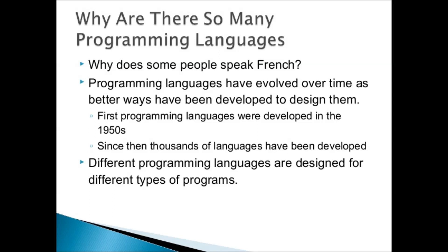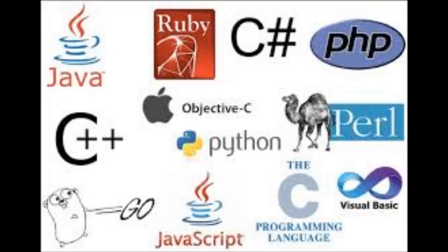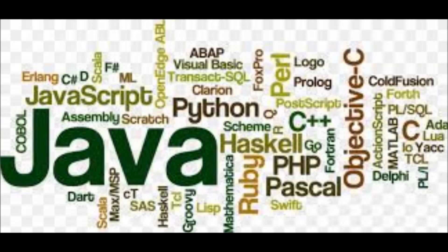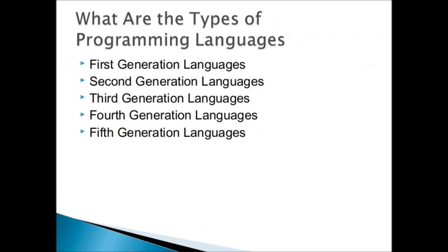Why are there so many programming languages? Over time, as many new machines were developed, new languages were felt as a necessity. Different programs required different hardware and software, so according to the requirements of programs, different programming languages were developed. Today we have many different programming languages such as Java, Python, Pascal, Ruby, C, and C++.